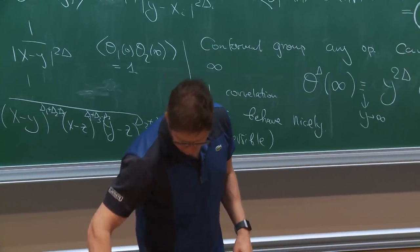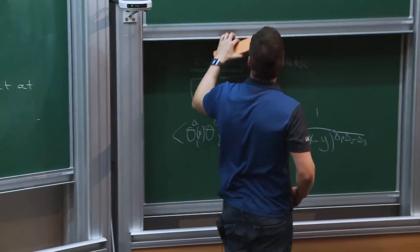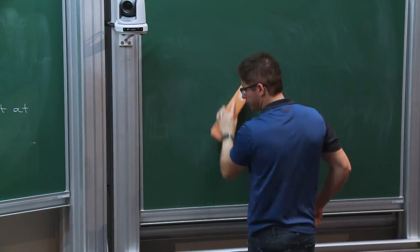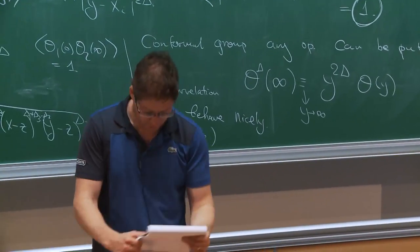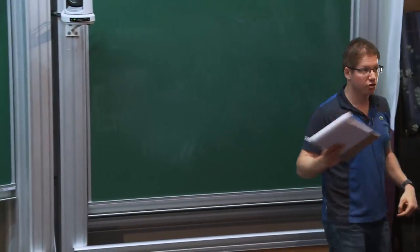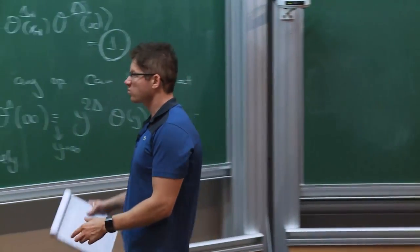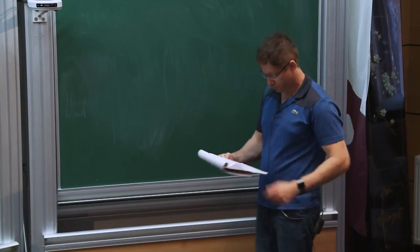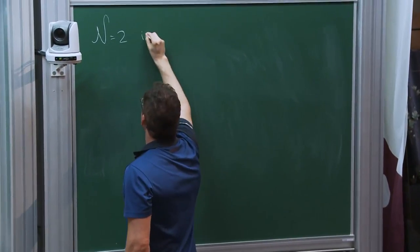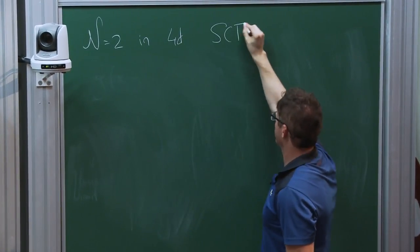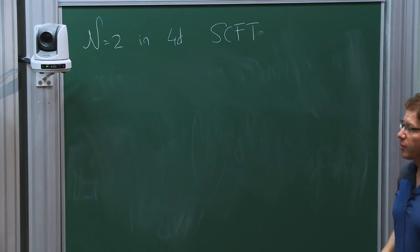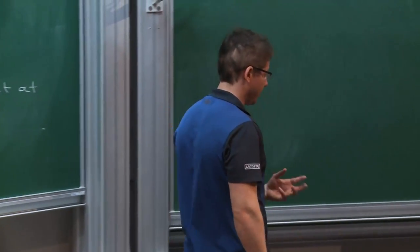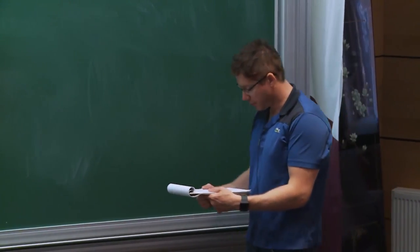Now N=2. We're talking about N=2 in four dimensions, specifically superconformal field theory. There hasn't been a lot of work on what happens if the theory is not conformal — the questions you might ask are a little different. For conformal theories there has been quite a bit of work.